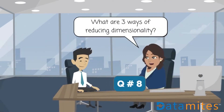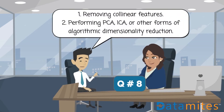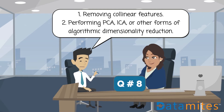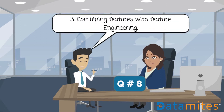What are three ways of reducing dimensionality? 1. Removing collinear features. 2. Performing PCA, ICA, or other forms of algorithmic dimensionality reduction. 3. Combining features with feature engineering.